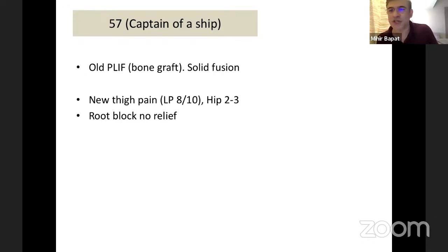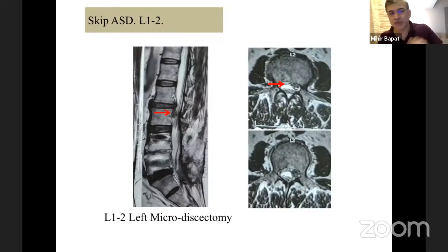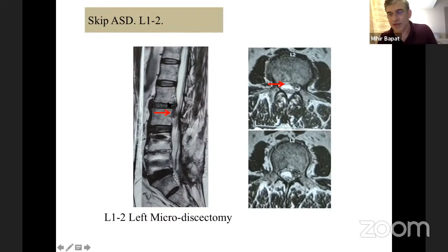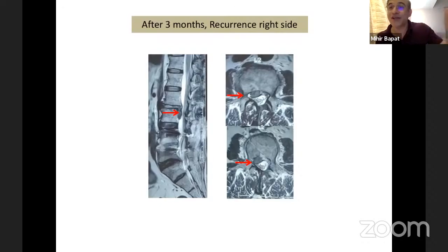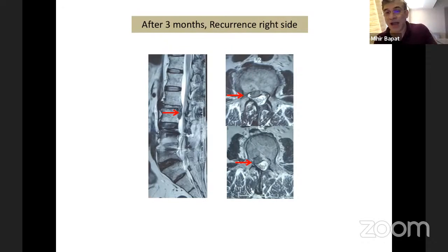This is a 57-year-old captain of a ship who had an old surgery about eight years back — he had a fusion. He had a skip normal level and developed a disc one level above that. Naturally, one would want to do a microscopic discectomy, which we did. After a year, he came back with a recurrence on the opposite side — first a disc on the left, then a recurrence on the right. He wanted a fusion, and ultimately underwent a fusion, leaving a skip segment in between.